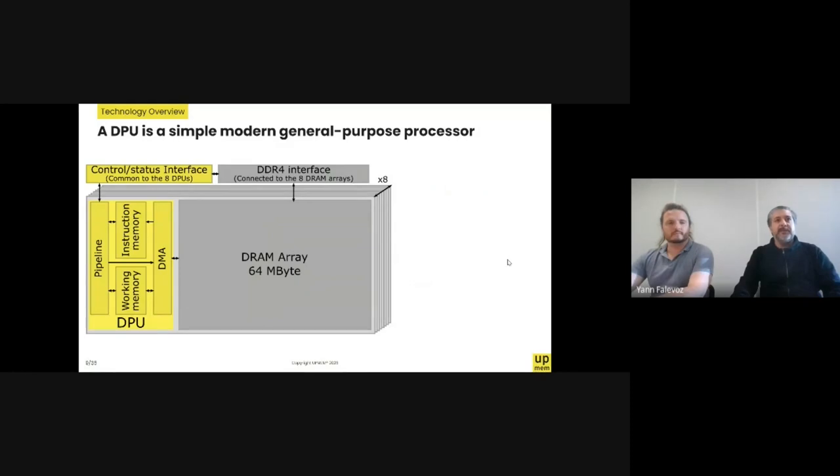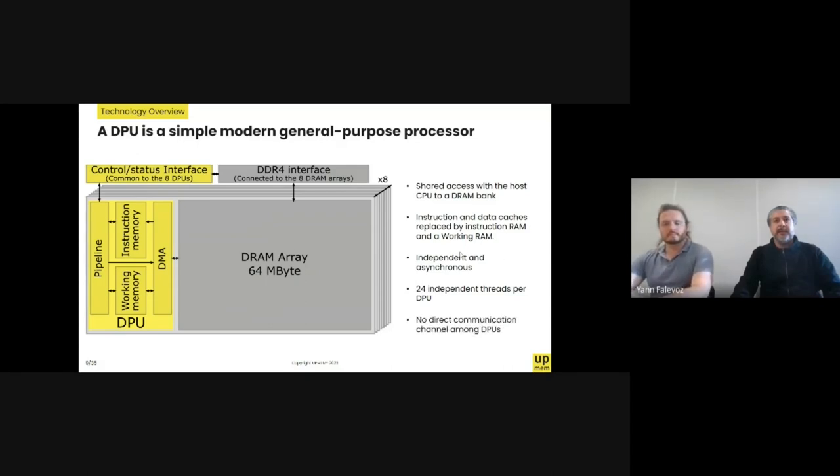Chips are produced using DRAM processes without manufacturing implication. And inside each chip, 8 processors coexist. We call those processors DPU standing for data processing units. You've probably done the math. A typical configuration totalizes 2560 DPUs for 160 GB of PIM DRAM. A DPU is a simple modern general purpose processor. It shares the access with the host to a DRAM bank called main RAM. Instruction and data caches have been replaced by instruction RAM and working RAM. DPUs are independent from each other's memory and they run asynchronously. Inside each DPU, 24 threads can execute independently.